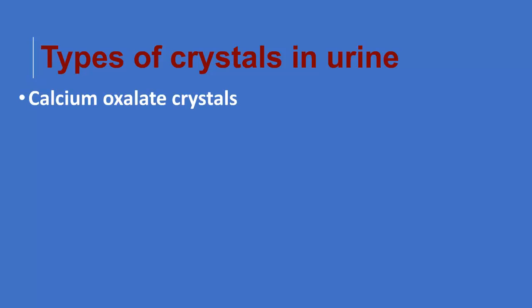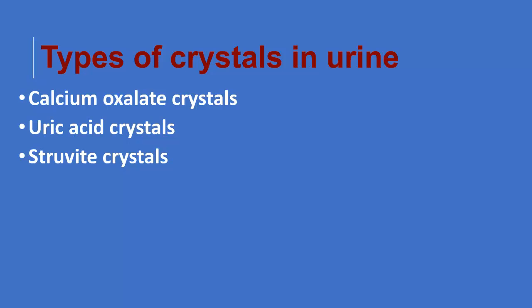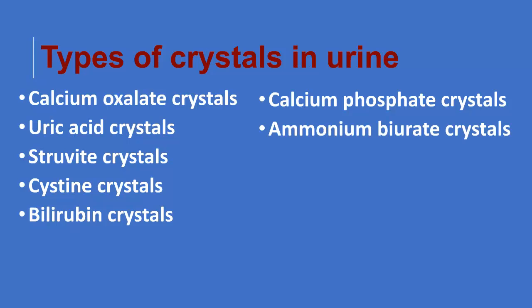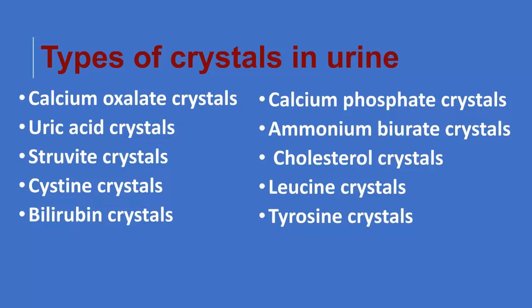Types of crystals in urine include: calcium oxalate crystals, uric acid crystals, struvite crystals, cystine crystals, bilirubin crystals, calcium phosphate crystals, ammonium biurate crystals, cholesterol crystals, leucine crystals, and tyrosine crystals.